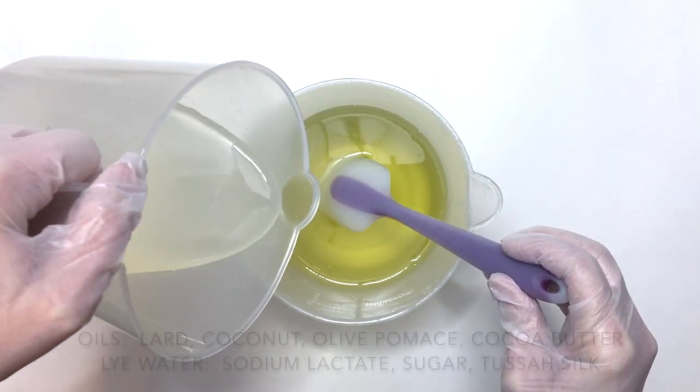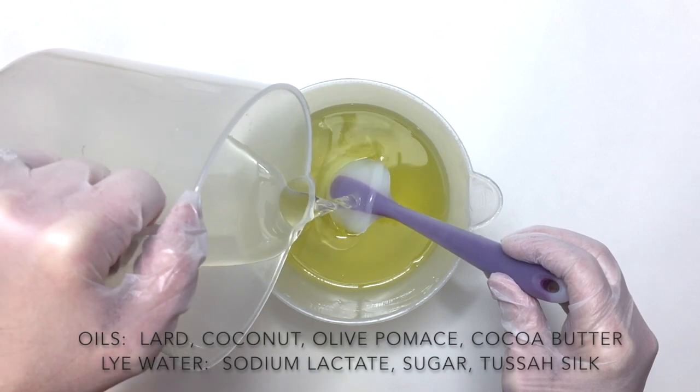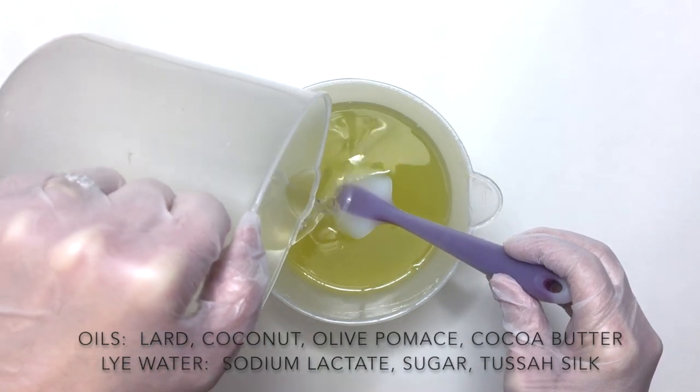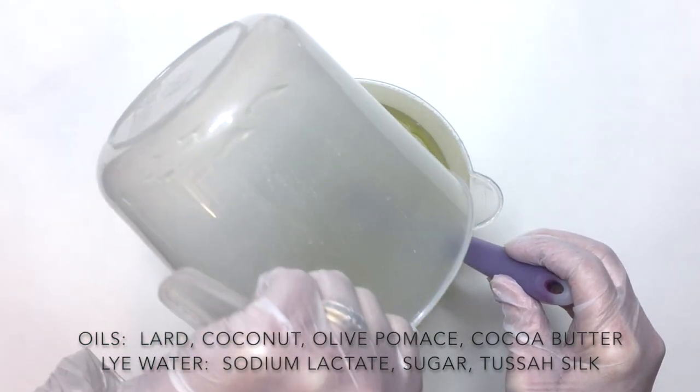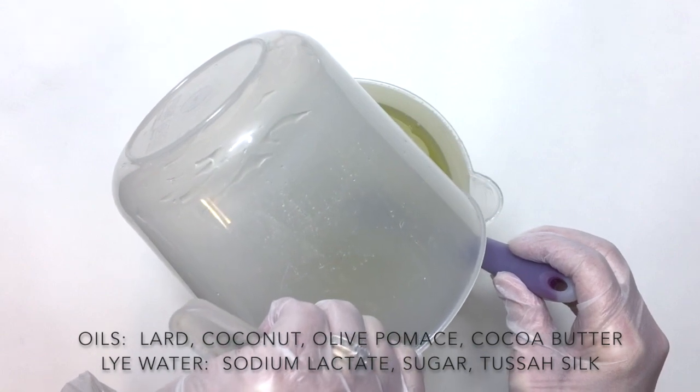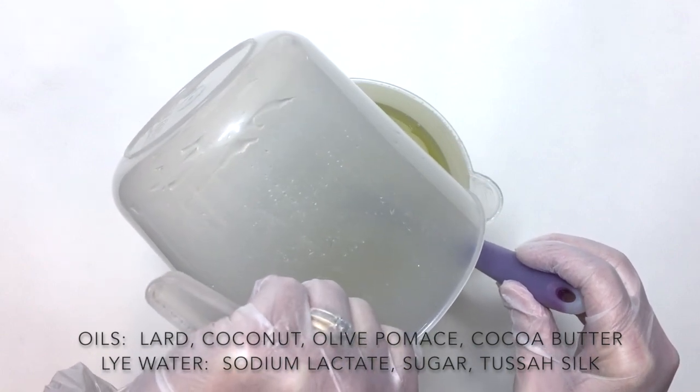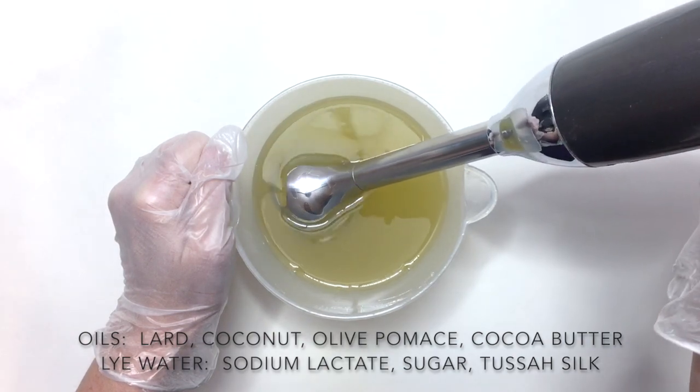I add my lye water to the melted oils. The oils I use are lard, coconut, olive pomace, and cocoa butter. My lye water has sodium lactate, sugar, and tussah silk already added. I'll stick blend this until it reaches a light trace.